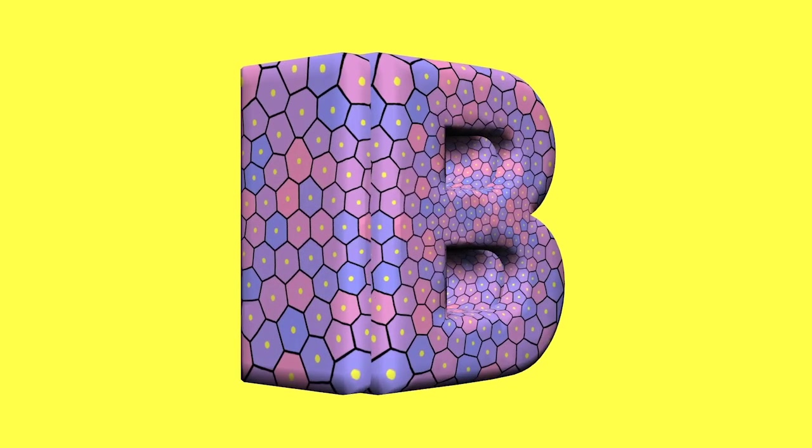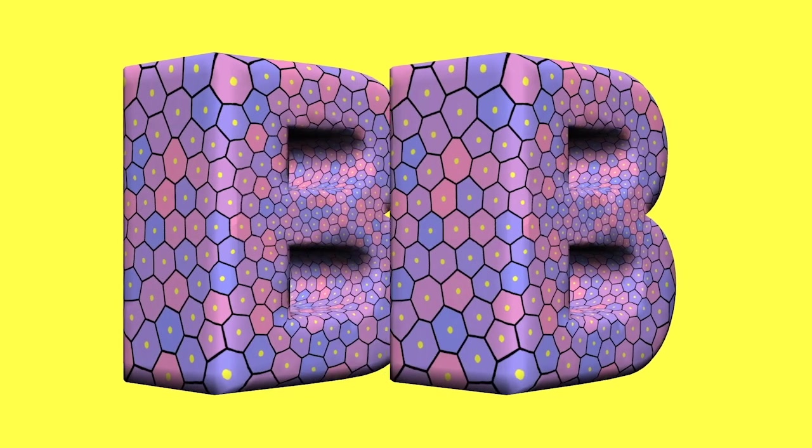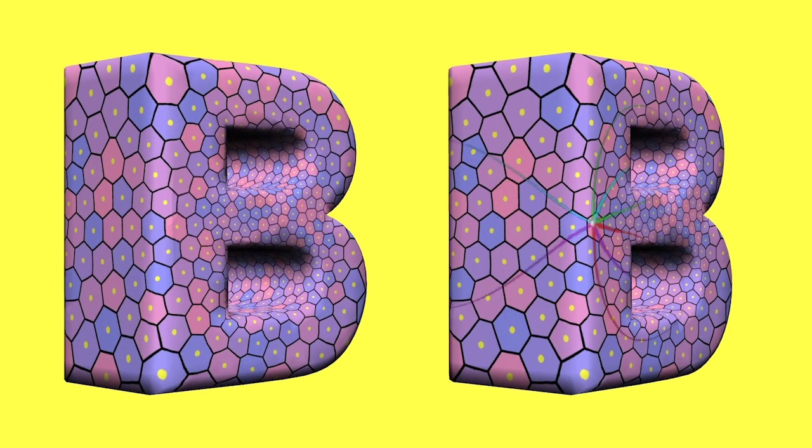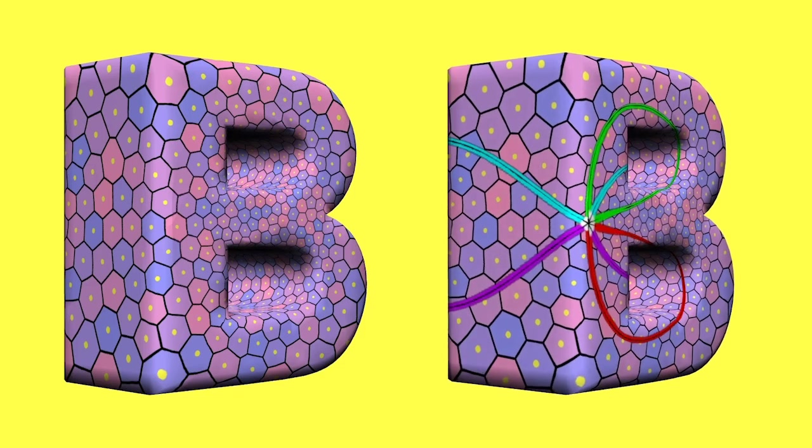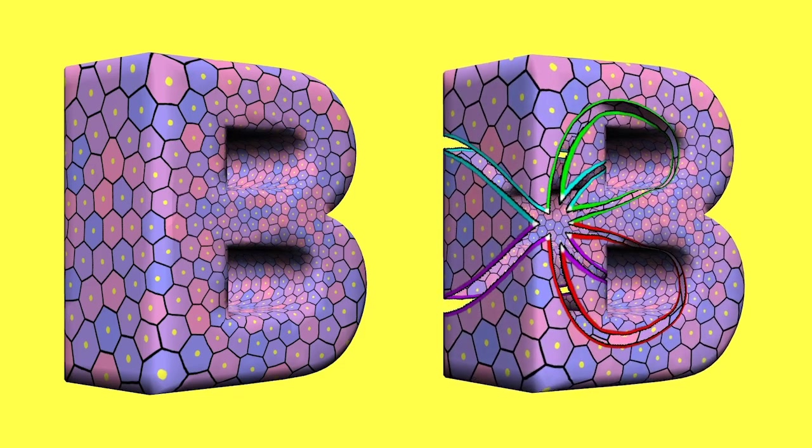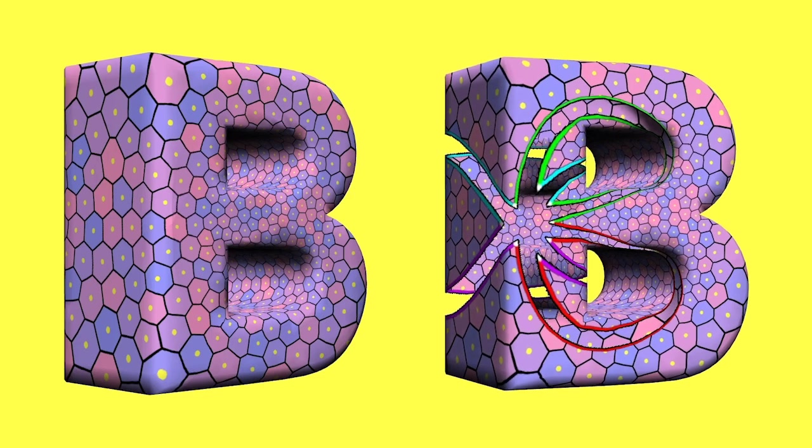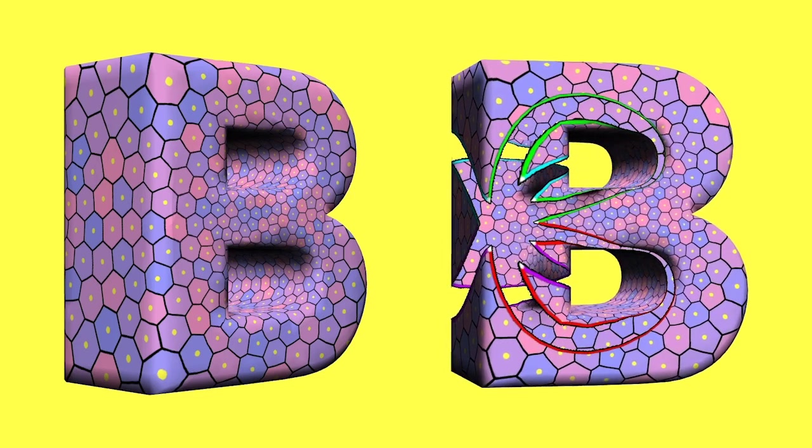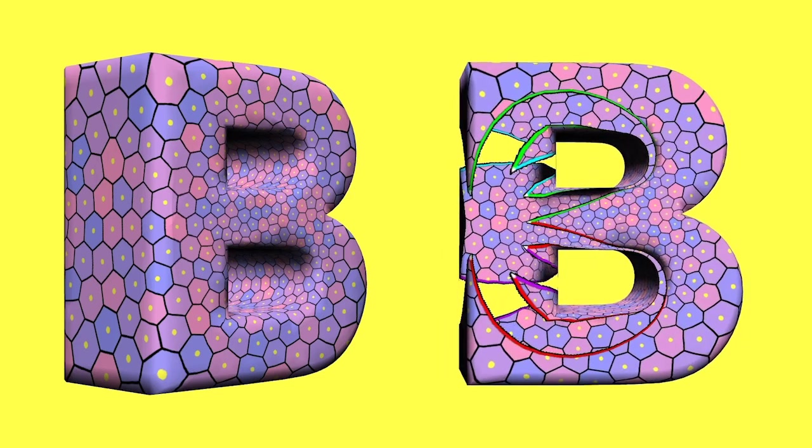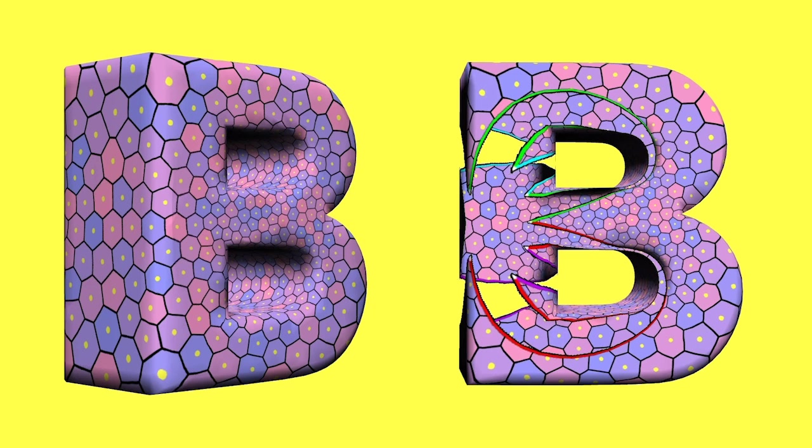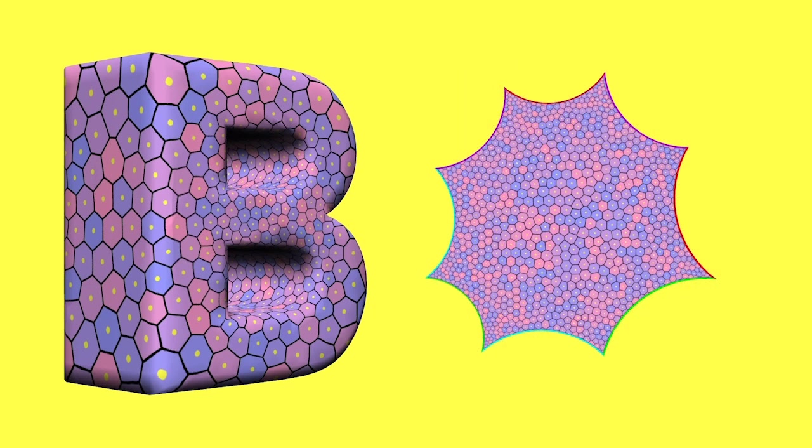A closed surface can have more than one hole. This inflated letter B has two holes. Such a surface is called a two-holed torus and can be cut open along four closed curves sharing a common point so that the cut open surface maps conformally onto a hyperbolic octagon, a flat region bounded by eight circular arcs.